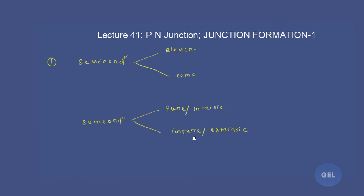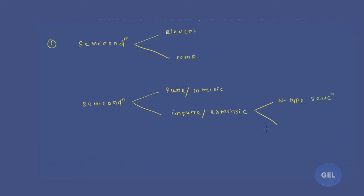Extrinsic semiconductors are divided into two types based on the kind of dopant element used. If we use a pentavalent impurity to dope a pure semiconductor, that semiconductor becomes an n-type semiconductor. If we use a trivalent impurity, then we get a p-type semiconductor.